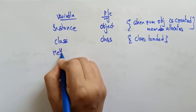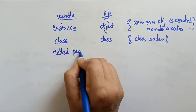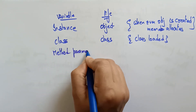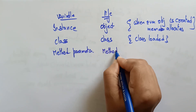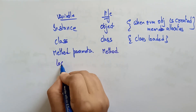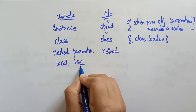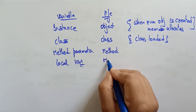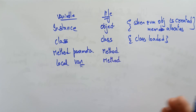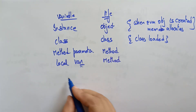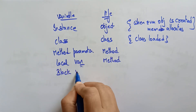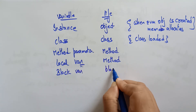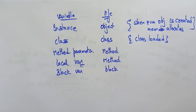Coming to method parameters — the method parameter's life is until the method exists. And the local variable is also until that main method is executing. The block variable's life is until that block is present — so until that for loop is executing, the block variable will be present.